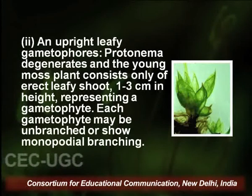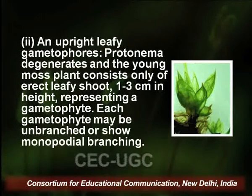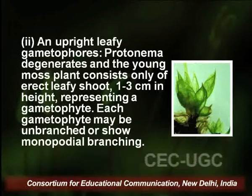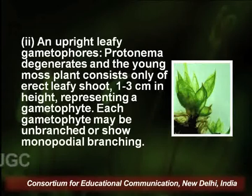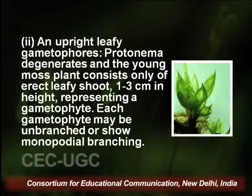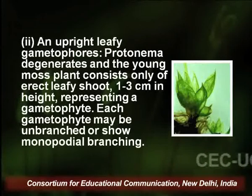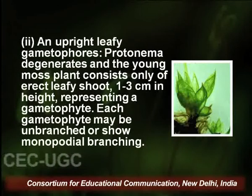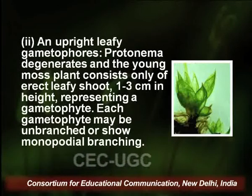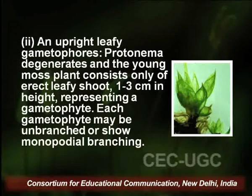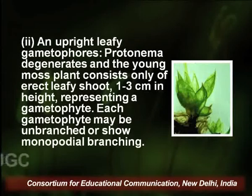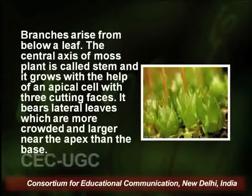The second part of morphology is the upright leafy gametophore. The protonema degenerates, and the young moss plant consists of only erect leafy shoots. These erect leafy shoots are 1 to 3 centimeters in height and represent the gametophyte.